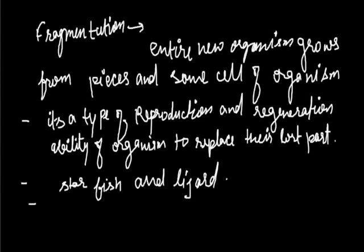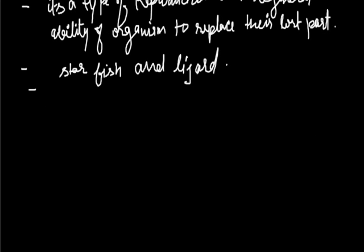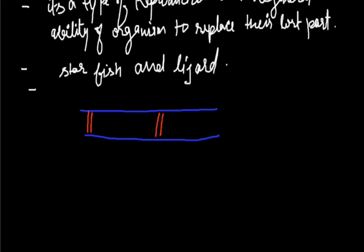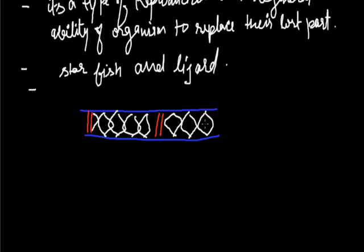Now let us study Fragmentation from a diagram. This is a filament of algae Spirogyra. Spirogyra is a multicellular algae in which asexual reproduction occurs by the process of Fragmentation.